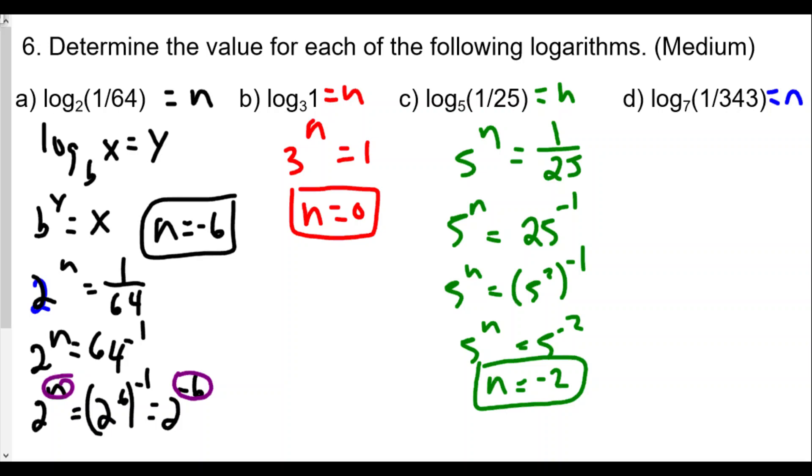And finally for d, our base is 7, our exponent is n, and set equal to the value here of 1 over 343. Again, this is the same as 7 to the n equals 343 to the negative 1. And now 7 times 7 is 49, so 49 times 7 is 343. So 7 to the third power. So we have 7 to the third raised to the negative 1. 7 to the n power equals 7 to the negative 3. Our value of n is equal to negative 3 in this situation.